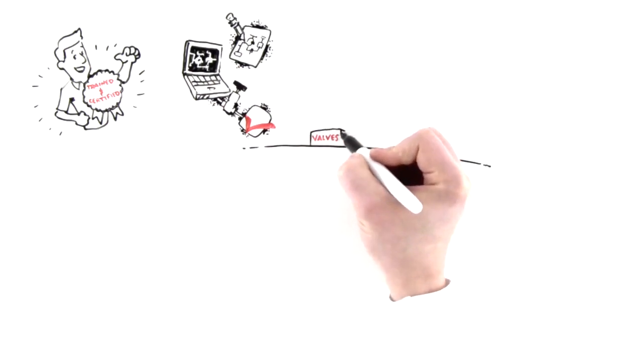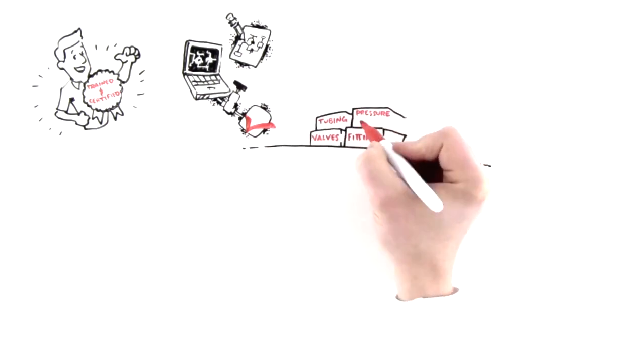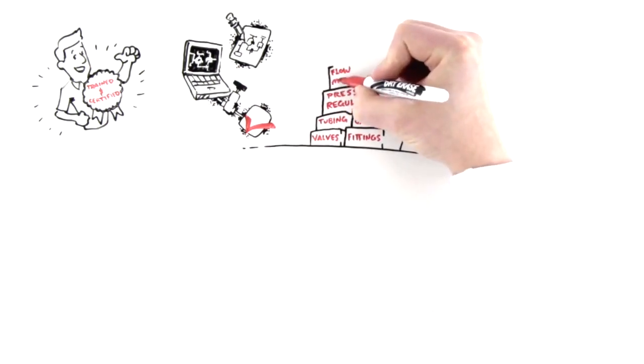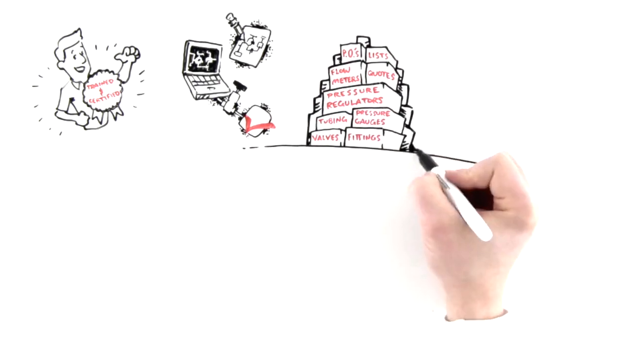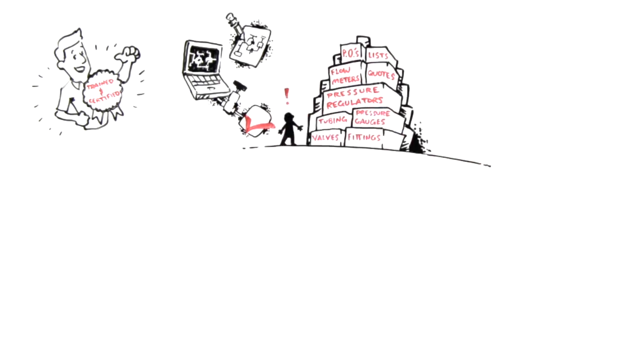He doesn't get boxes of valves, fittings, tubing, pressure gauges, pressure regulators, and flow meters, along with numerous quotes, part numbers, purchase orders, packing lists, and invoices that go along with them, or need the administrative receiving and assembly resources to deal with it all.